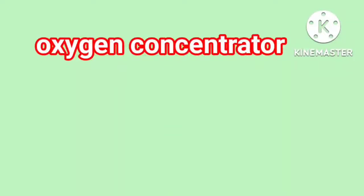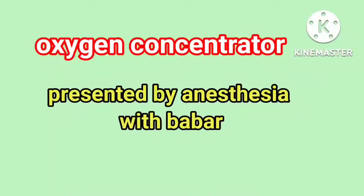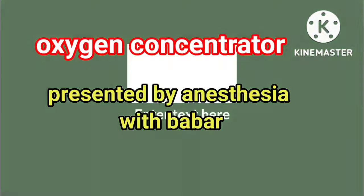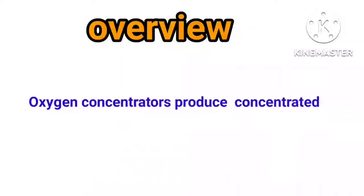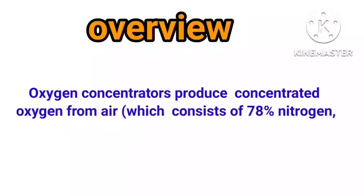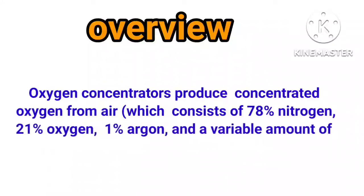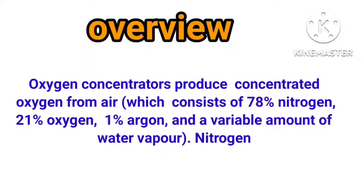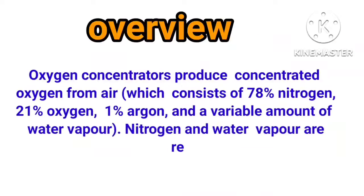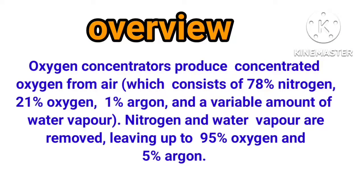Oxygen Concentrator, presented by Anesthesia with Babur. Oxygen concentrators produce concentrated oxygen from air, which consists of 78% nitrogen, 21% oxygen, 1% argon, and a variable amount of water vapor. Nitrogen and water vapor are removed, leaving up to 95% oxygen and 5% argon.